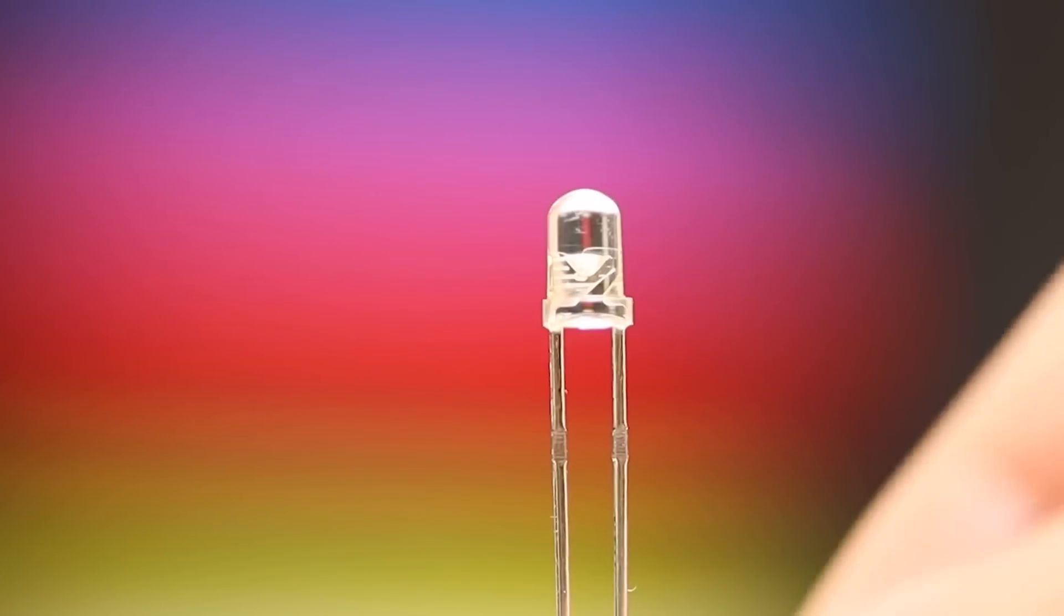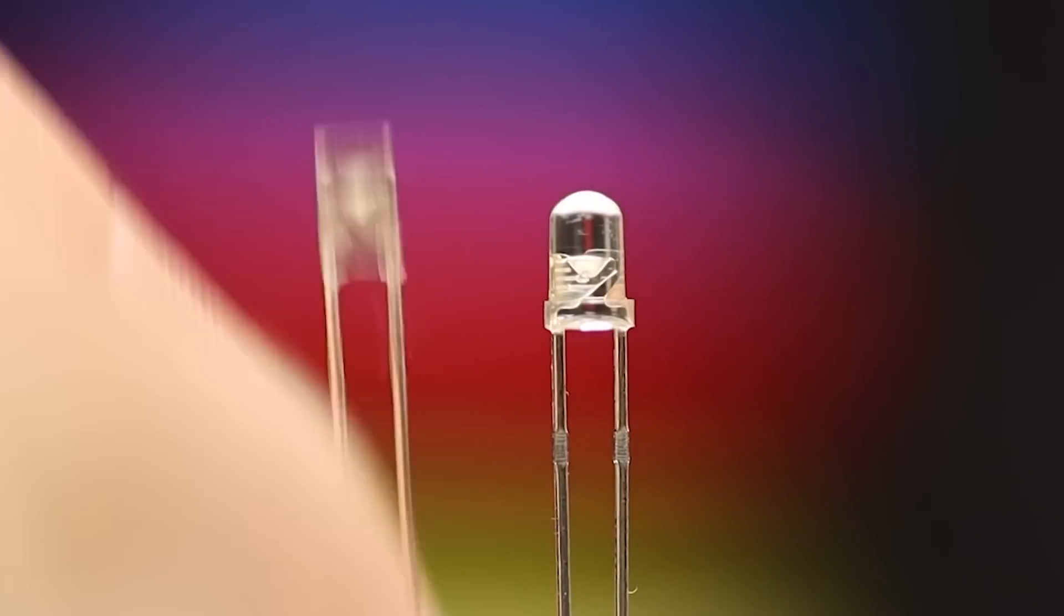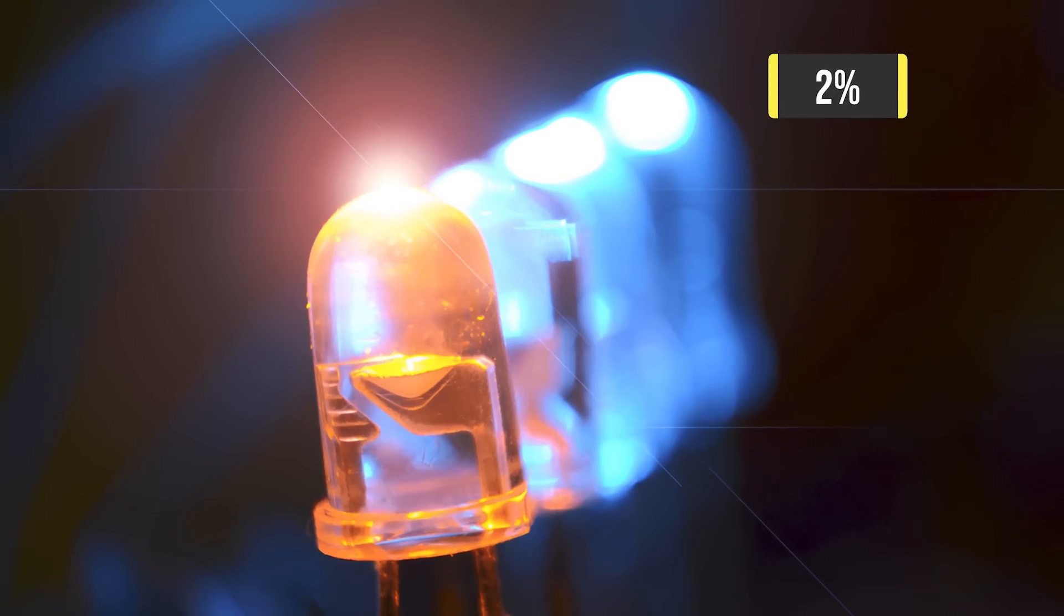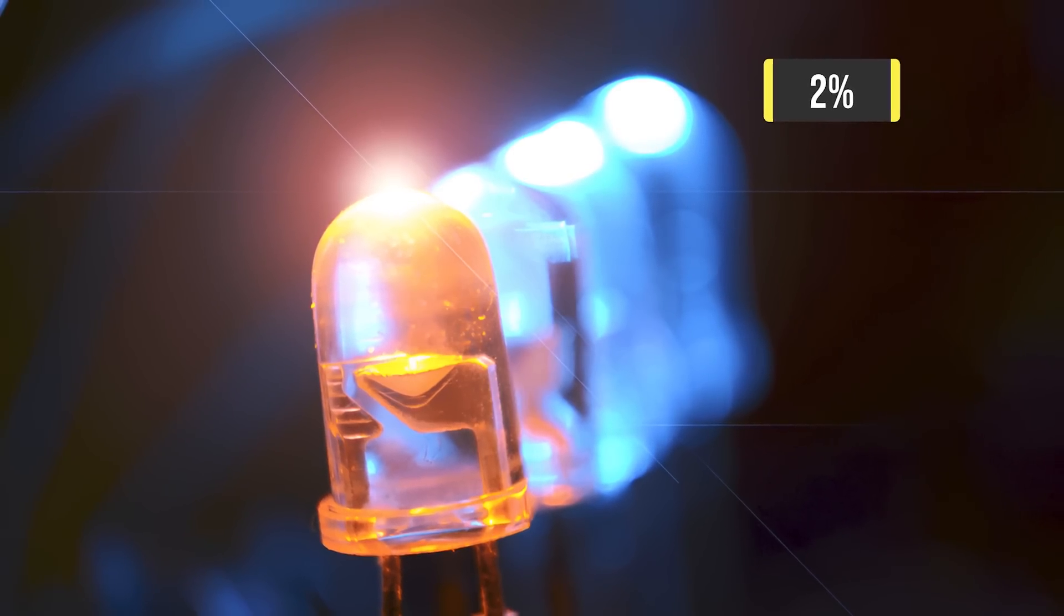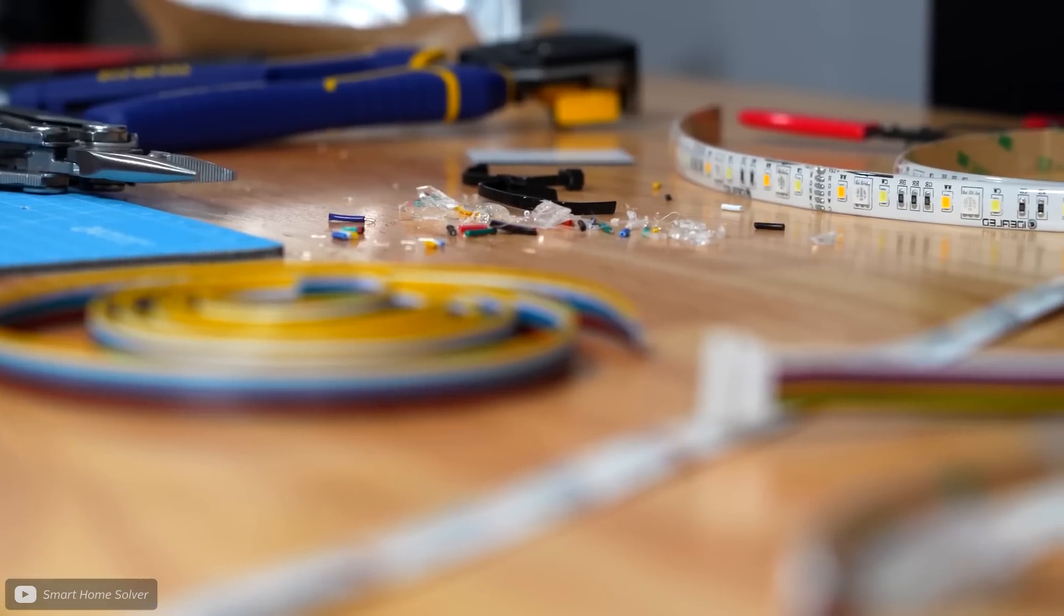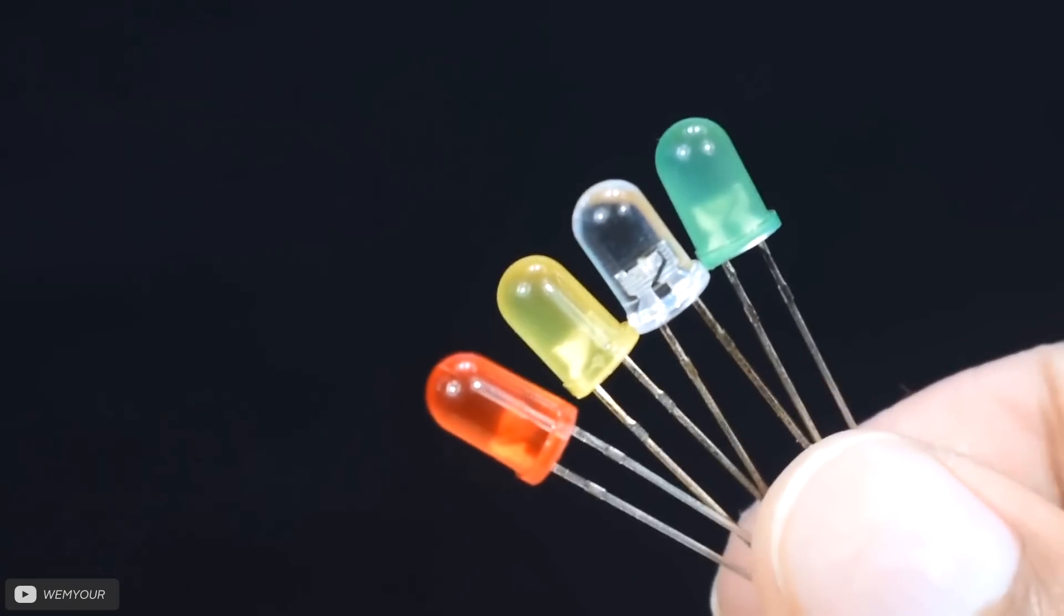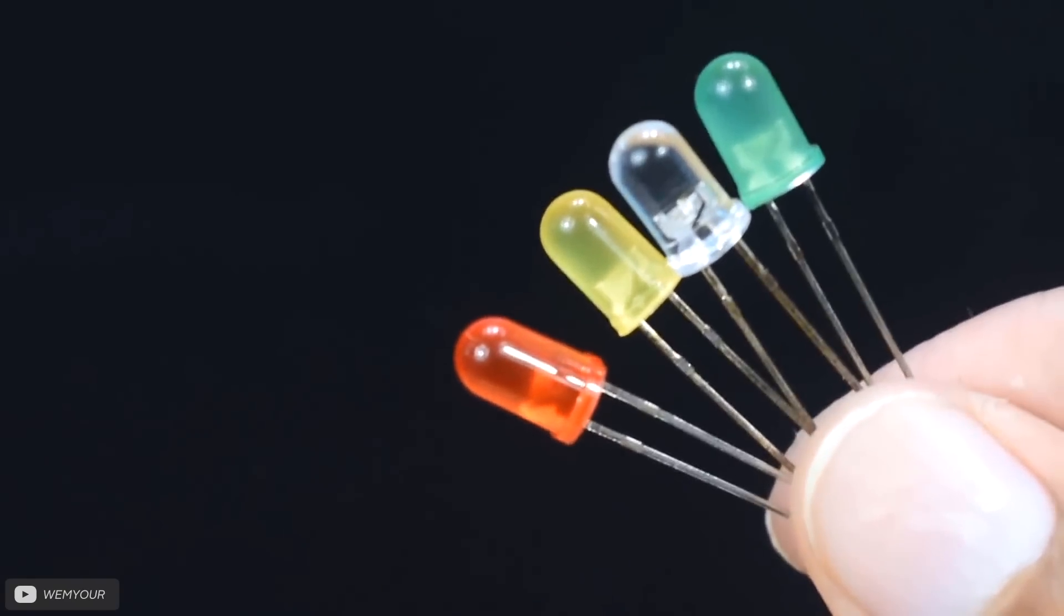It's hard to get a solid figure of the light extraction efficiency of conventional LEDs because there's so much variation, however, a number I've seen floating around a lot is around 40%. The factors at play include the design and material quality, and I've even seen this figure put as low as 2%. Regardless, even on a good day, LEDs don't seem to be emitting a lot of the light that they're producing. Clearly, LEDs are not nearly as efficient as they could be.